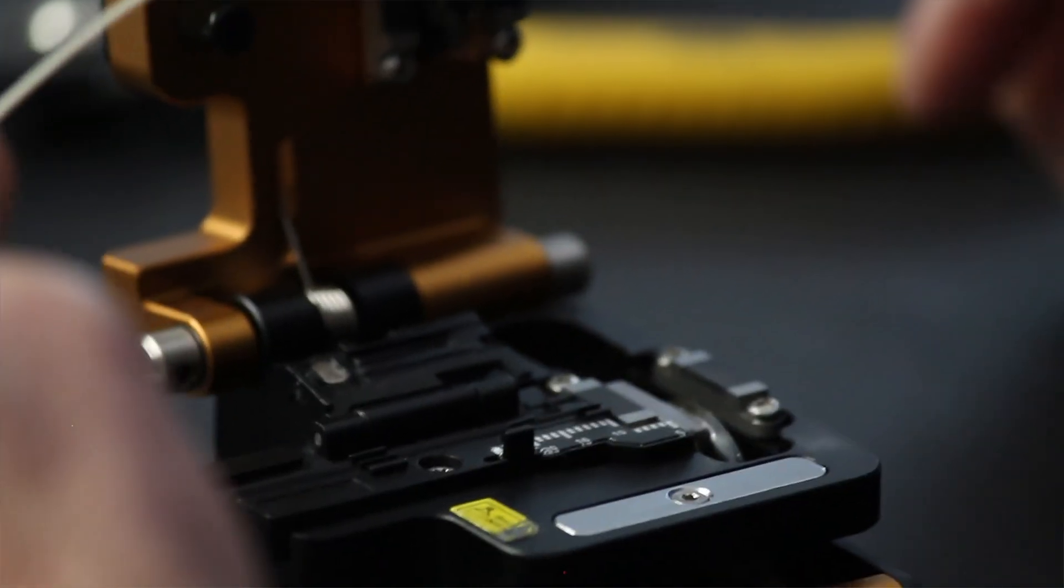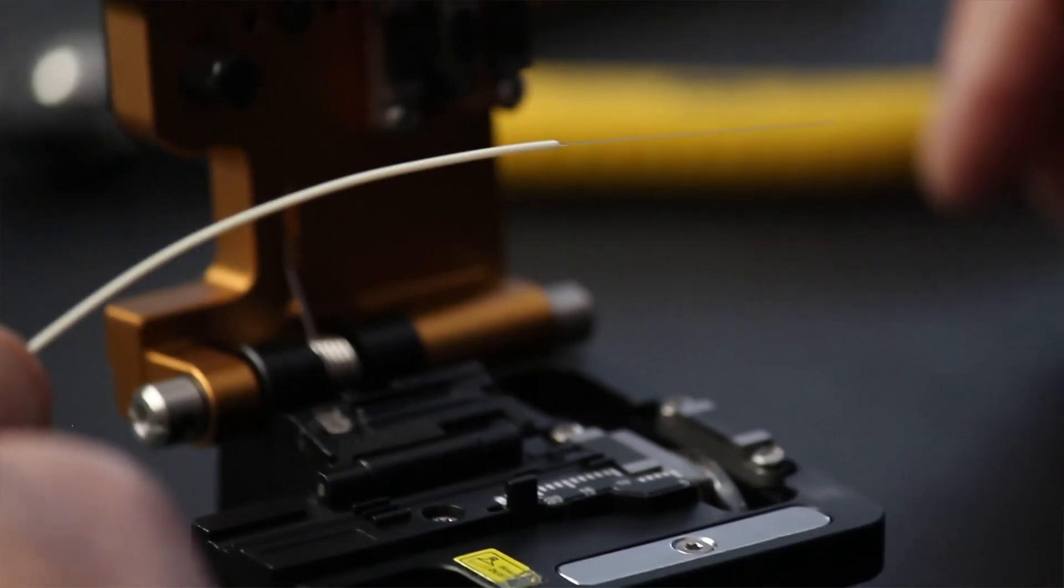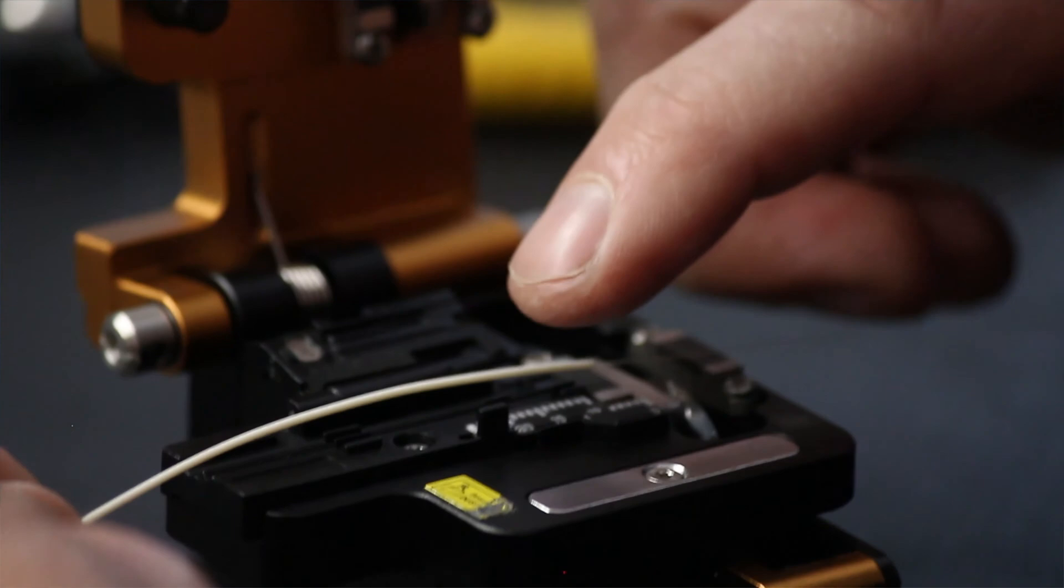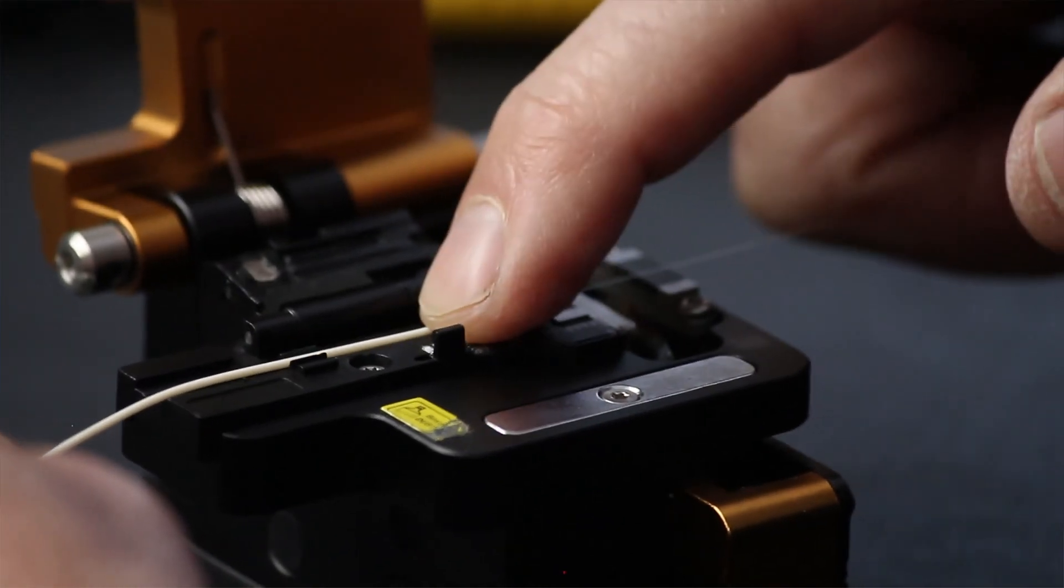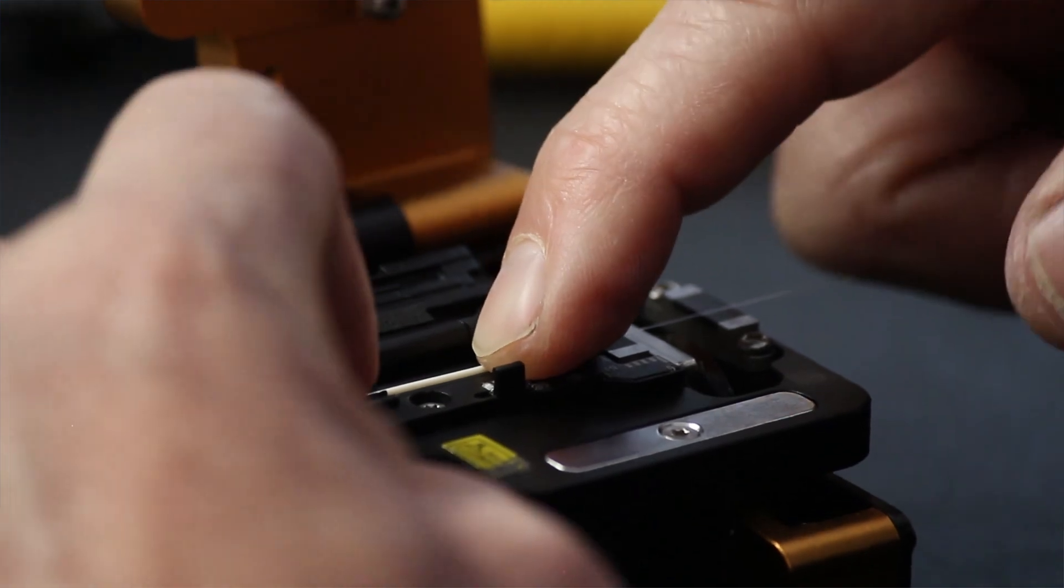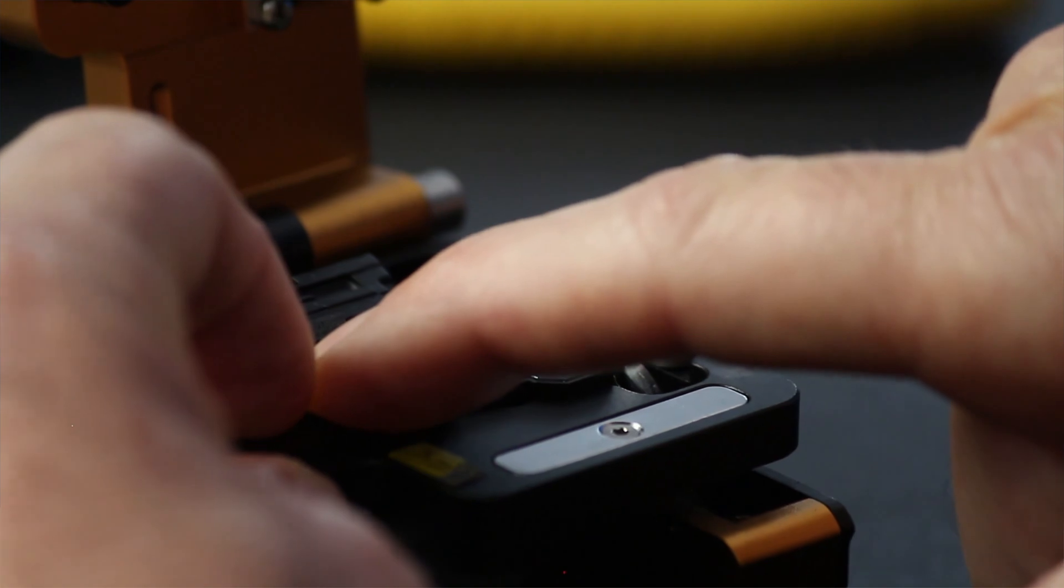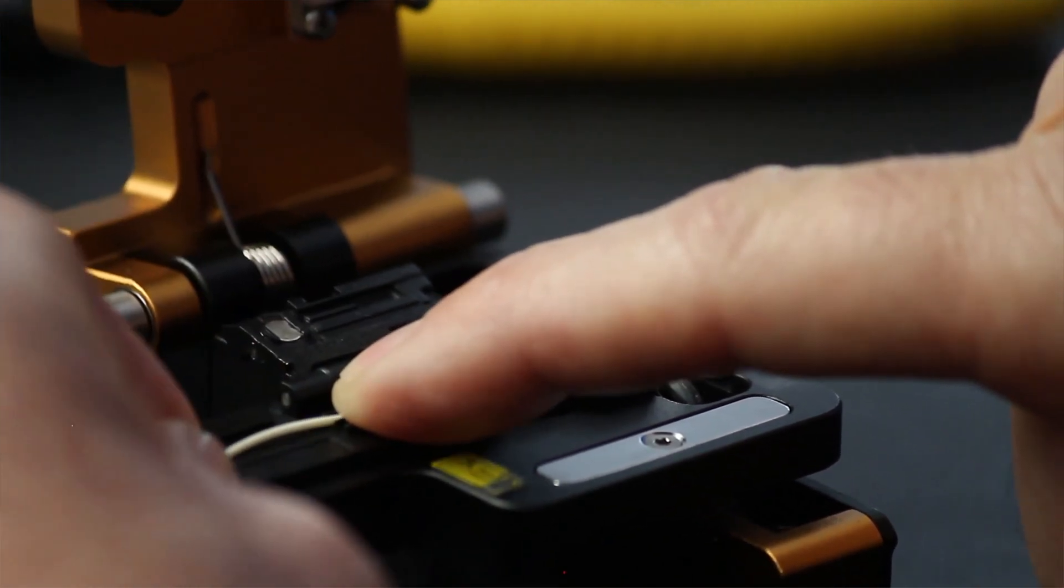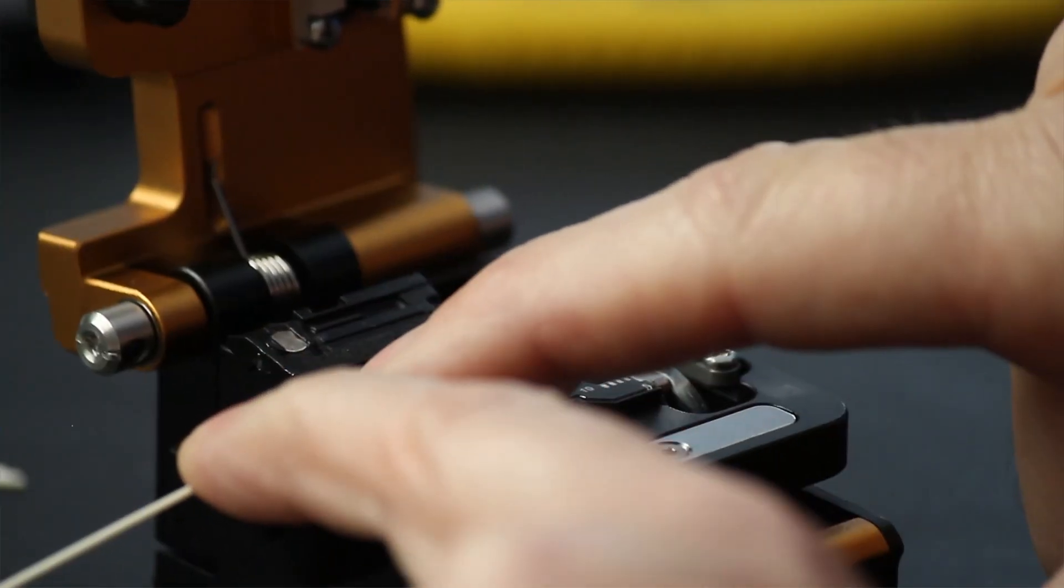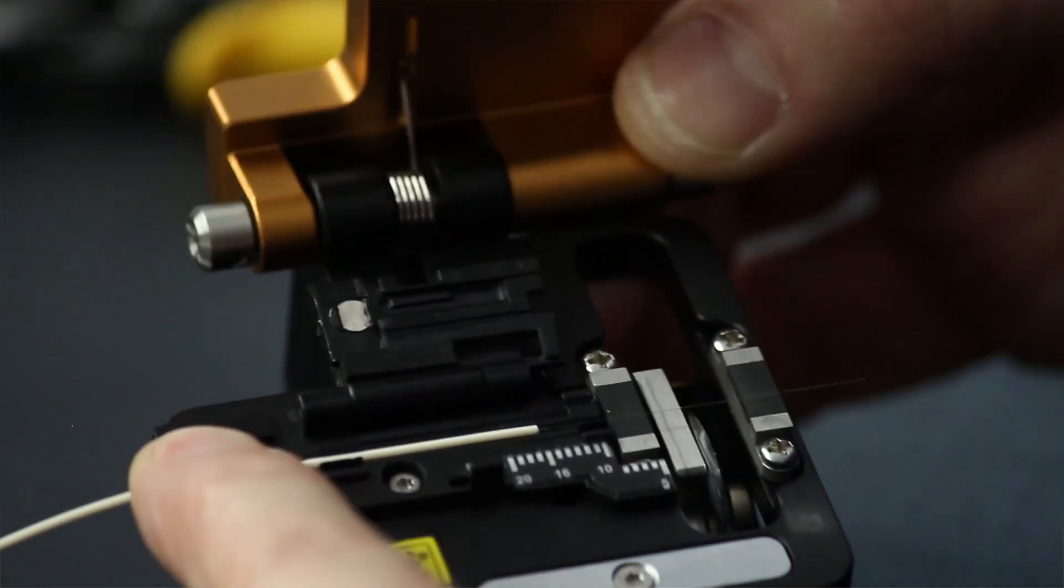So we're going to go in here and you can see there's a natural bend to the fiber. Use that to your advantage when placing into the cleaver fiber holder. So we put it in here and we draw it back. And what we're going to do is I'm going to cleave it at 16 millimeters, because that's easy to see. And I'm going to pull it back so the tight buffer is right at 16 millimeters.